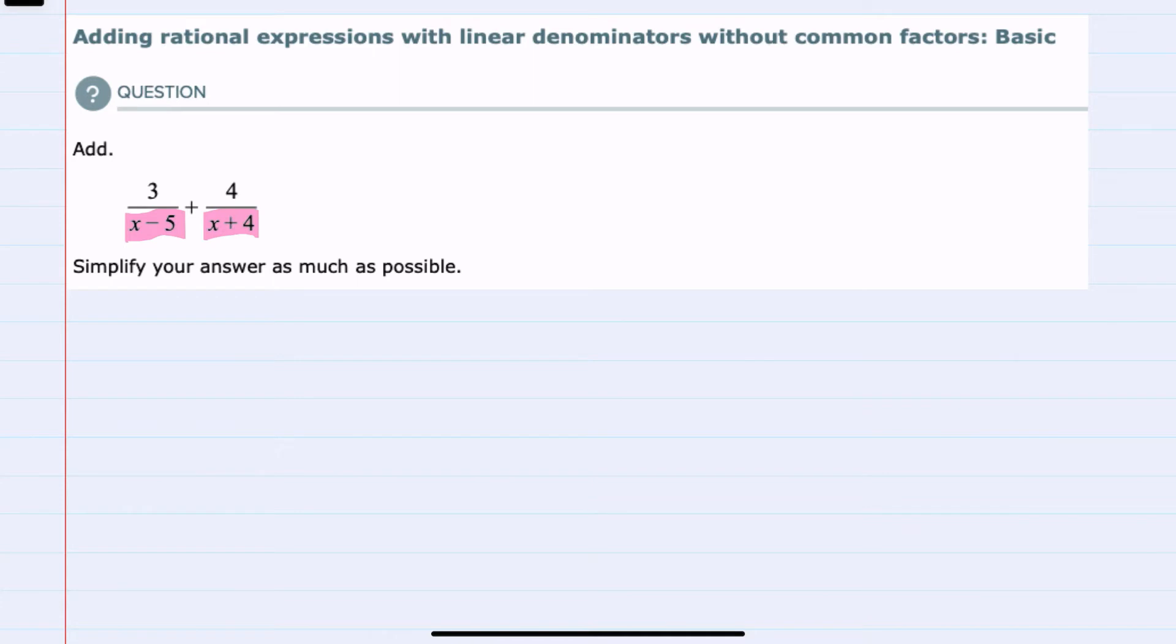They're not the same, so we will need to get a common denominator, and those expressions are each a single term. So that means that whenever we do add these, our common denominator will have to have an x minus 5 term and it will also have to have an x plus 4 term.